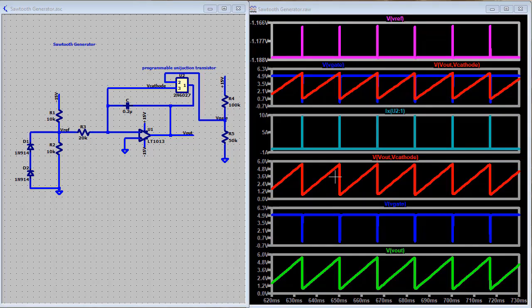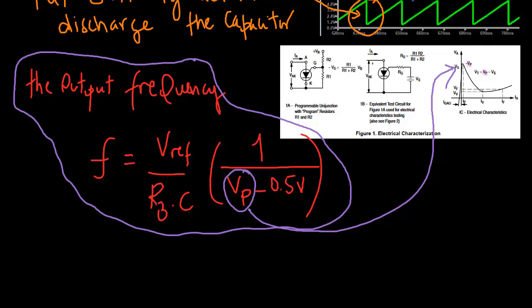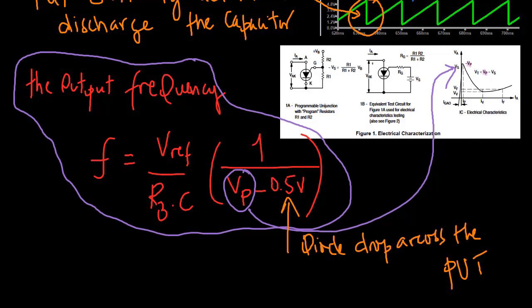When the capacitor discharges, the PUT turns off, and the cycle repeats. The gate voltage of the PUT is set via voltage divider resistors R4 and R5. The R1 and R2 voltage divider resistors set the reference voltage at the inverting input, while the diodes help stabilize the voltage across R2 when it is adjusted to vary the frequency. The output voltage amplitude is determined by R4, while the output frequency is approximated by this expression. Here the 0.5 volts represents a typical voltage drop across a PUT.